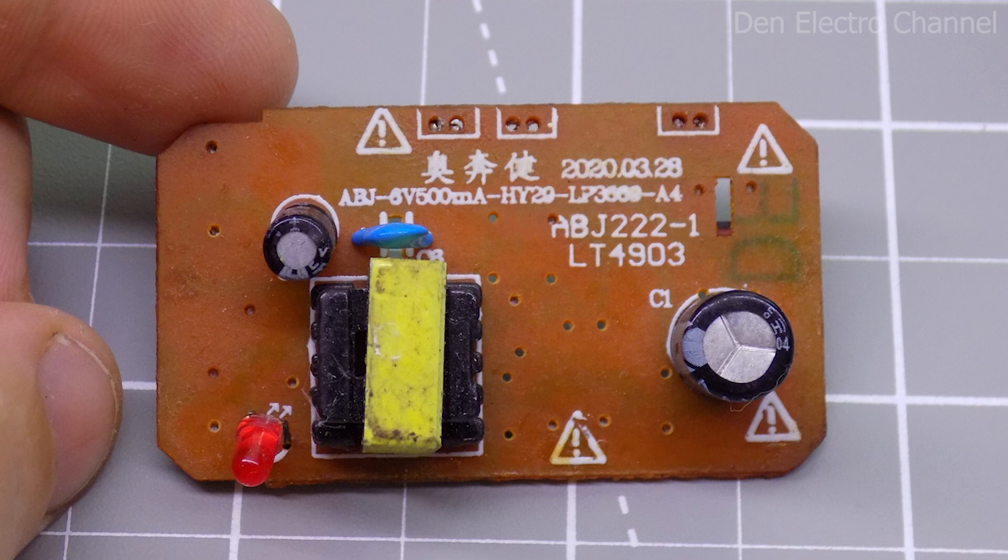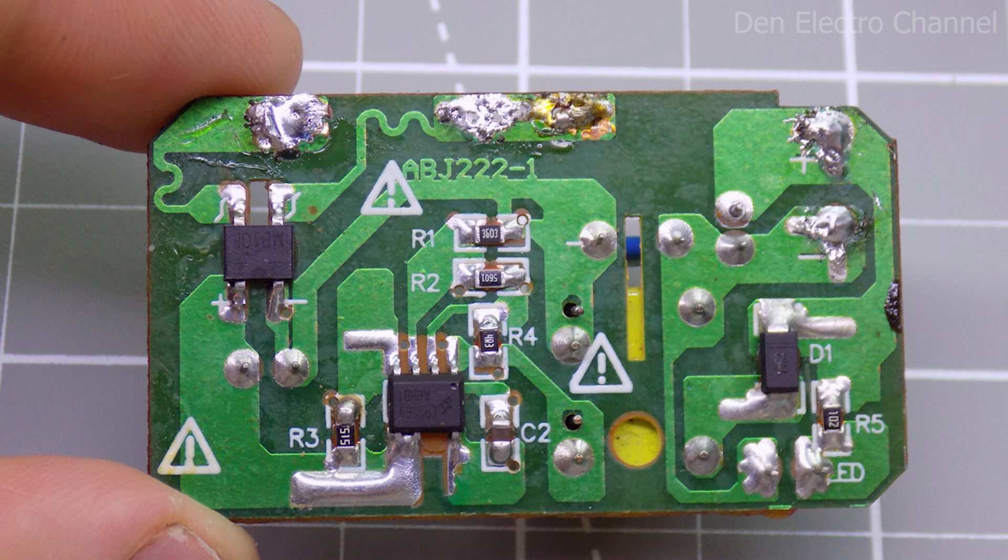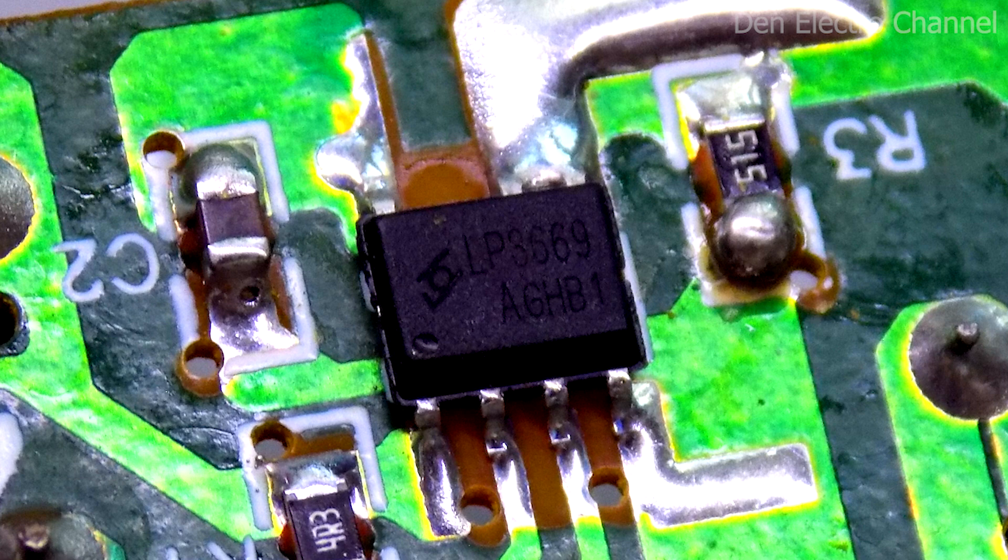As an example, I will use this simple power supply. It has a minimum number of radio components on the board and this is very good. If anyone is interested, the power supply is made on an LP3669 chip.